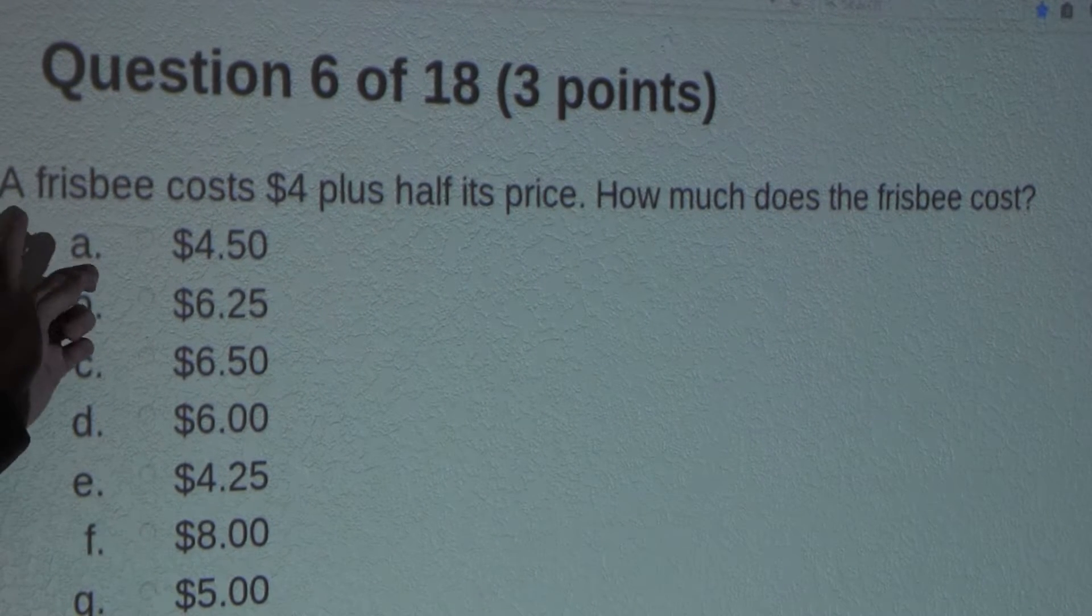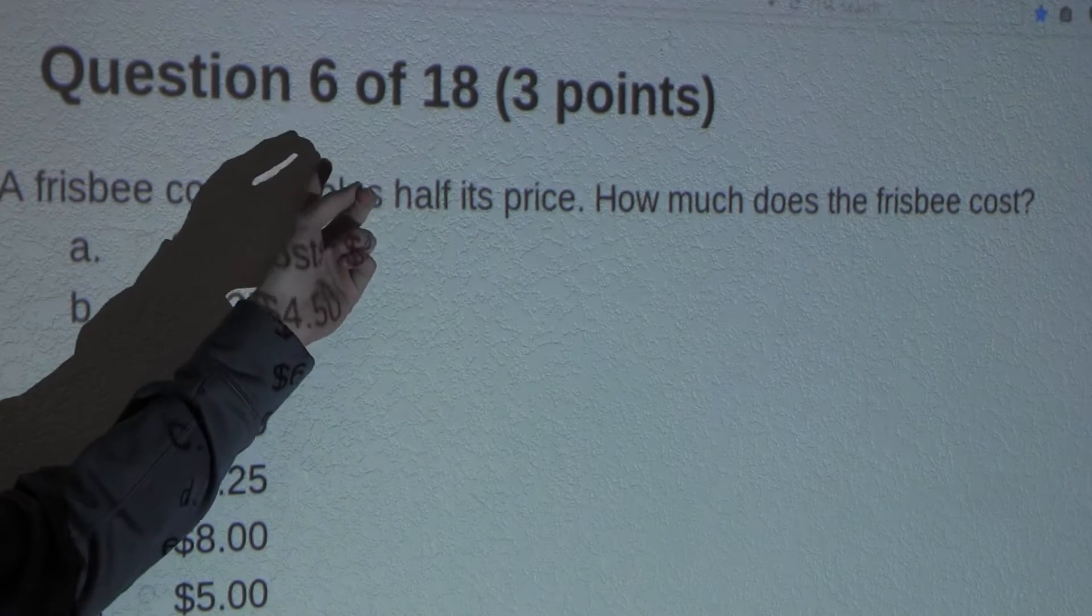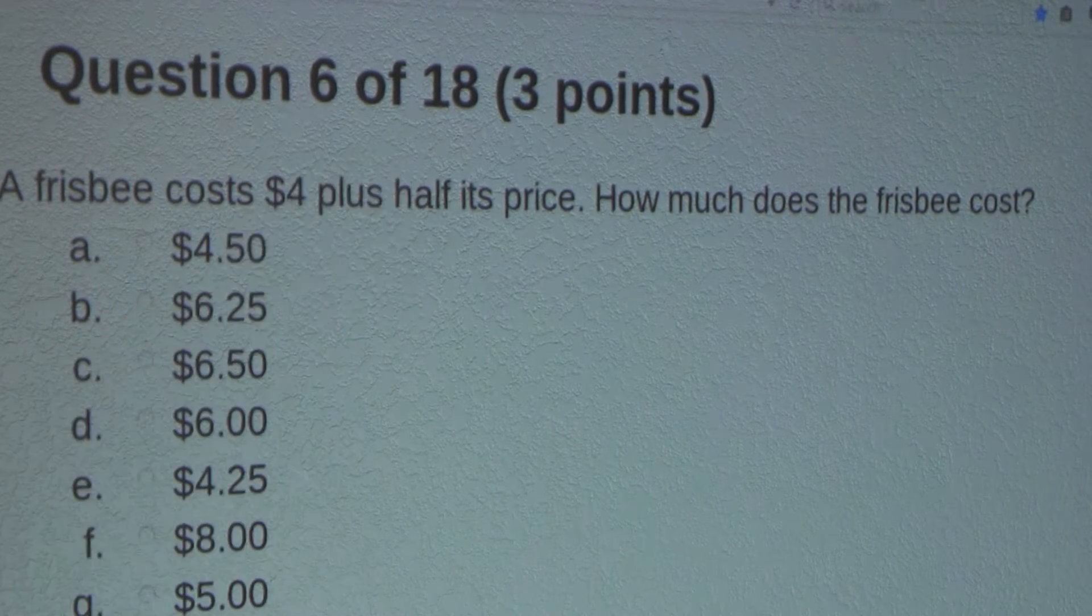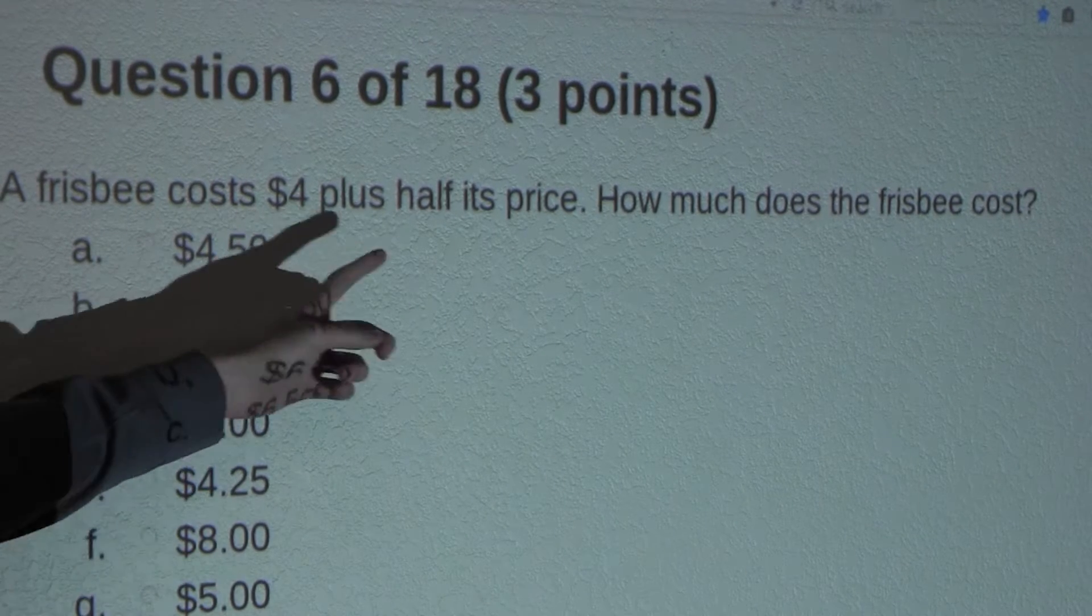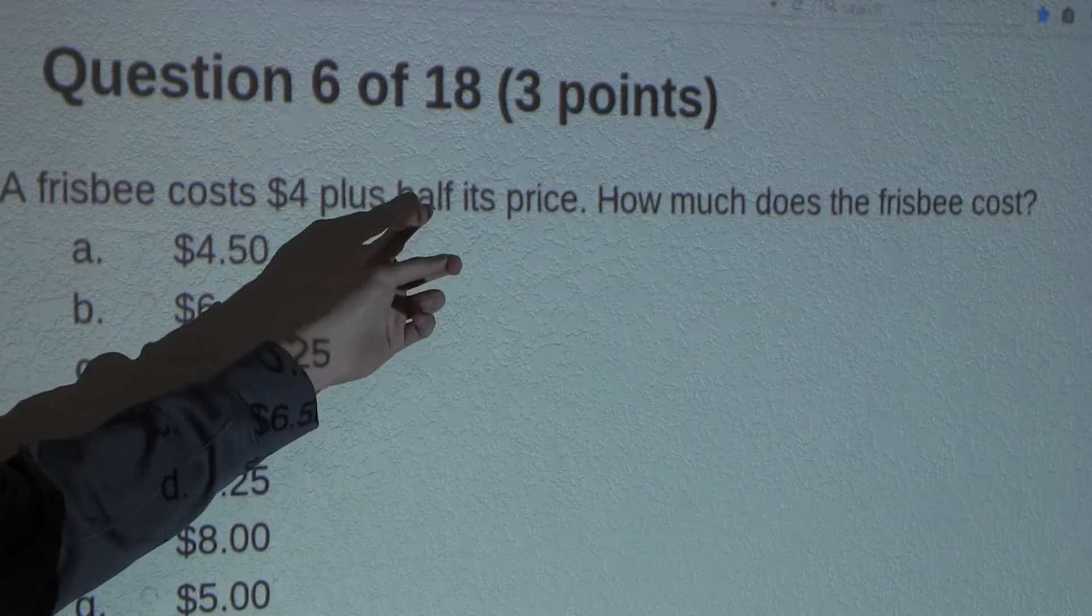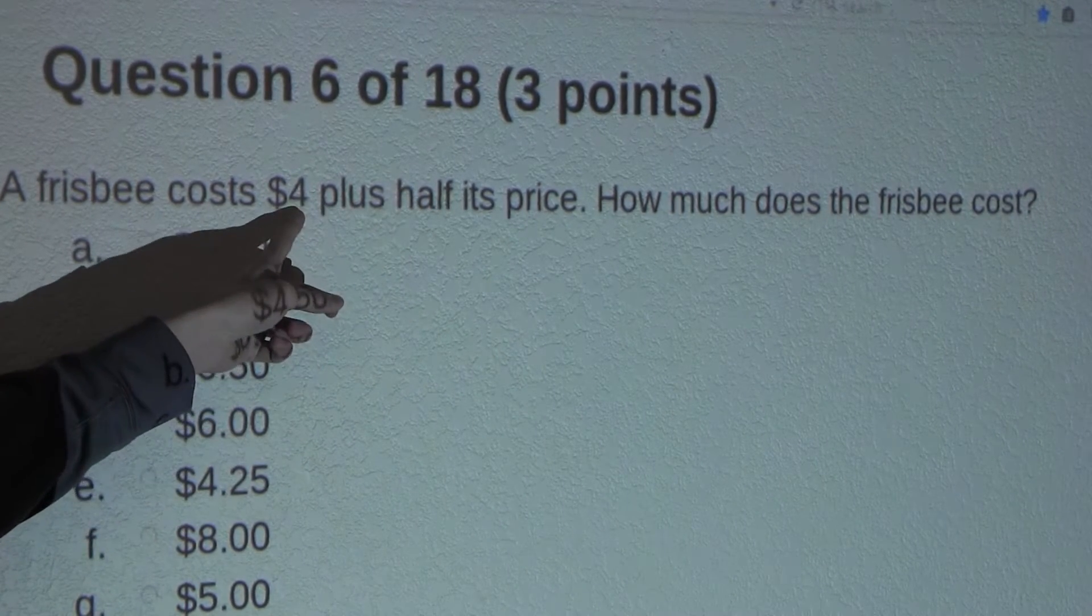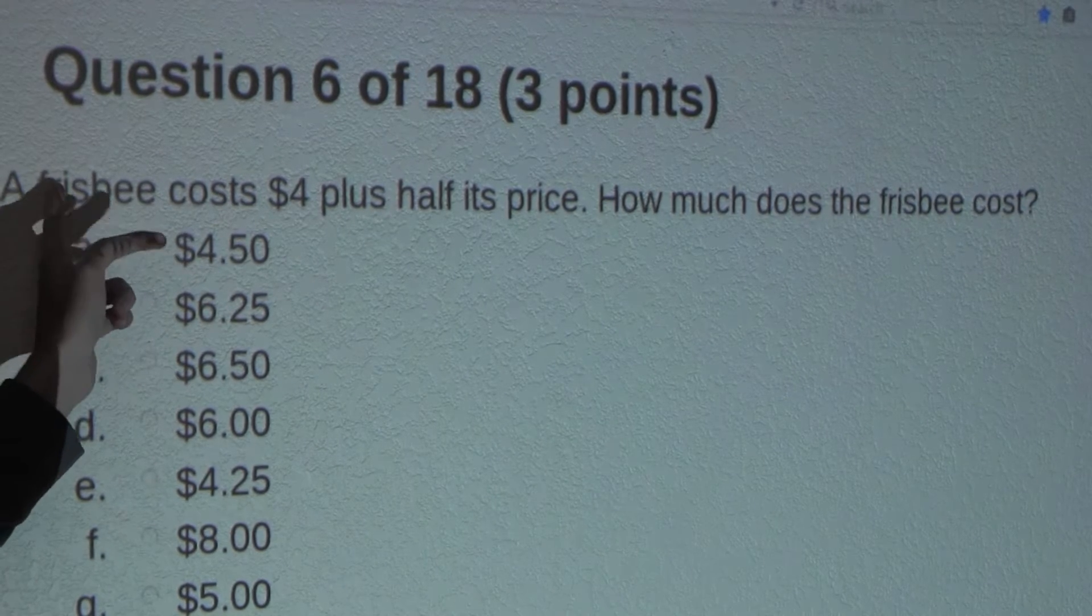Okay, well let's re-read this again. A frisbee costs $4 plus half its price. Well, let's re-word this a little and start from the back, or the end. So what we can say is half its price plus $4 is the full price of the frisbee.